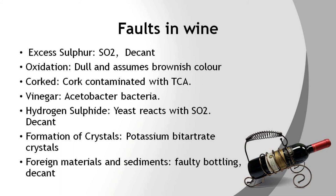Wine turns to vinegar when exposed to oxygen for a long duration and also by the activities of Acetobacter bacteria, which if unchecked acts on alcohol and converts the wine to vinegar. If a guest complains of this, replace the wine. Wine smelling of hydrogen sulphide, similar to rotten egg, occurs when the yeast reacts with sulphur dioxide during fermentation. However, this fades away when the wine is decanted. This occurs mainly in red wine.